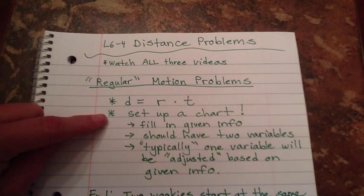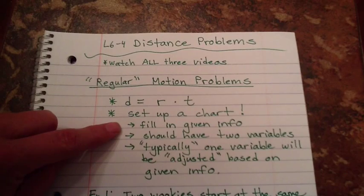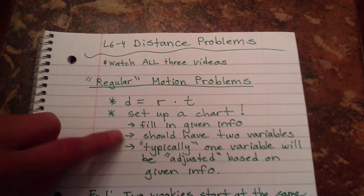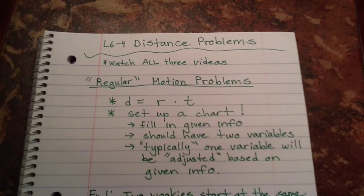You're going to set up a chart, which I'll show you how to do, and you're going to fill in your given info, just like we did when we had mixture problems. You should end up with two variables. That's a little bit different. In mixture problems, you ended up with two empty spaces, but you only had one variable.